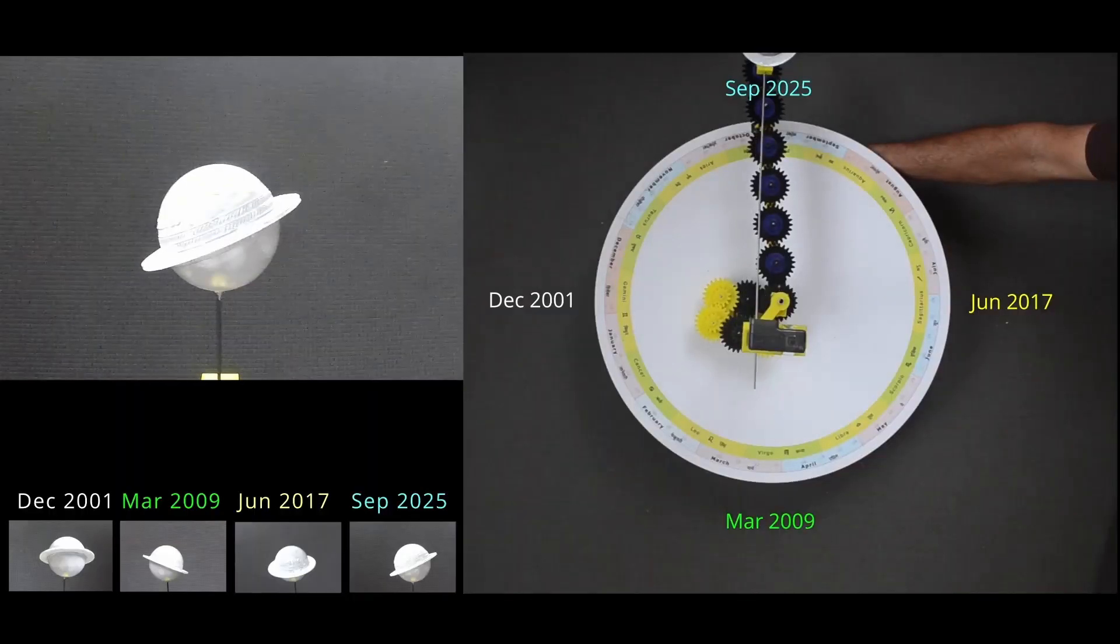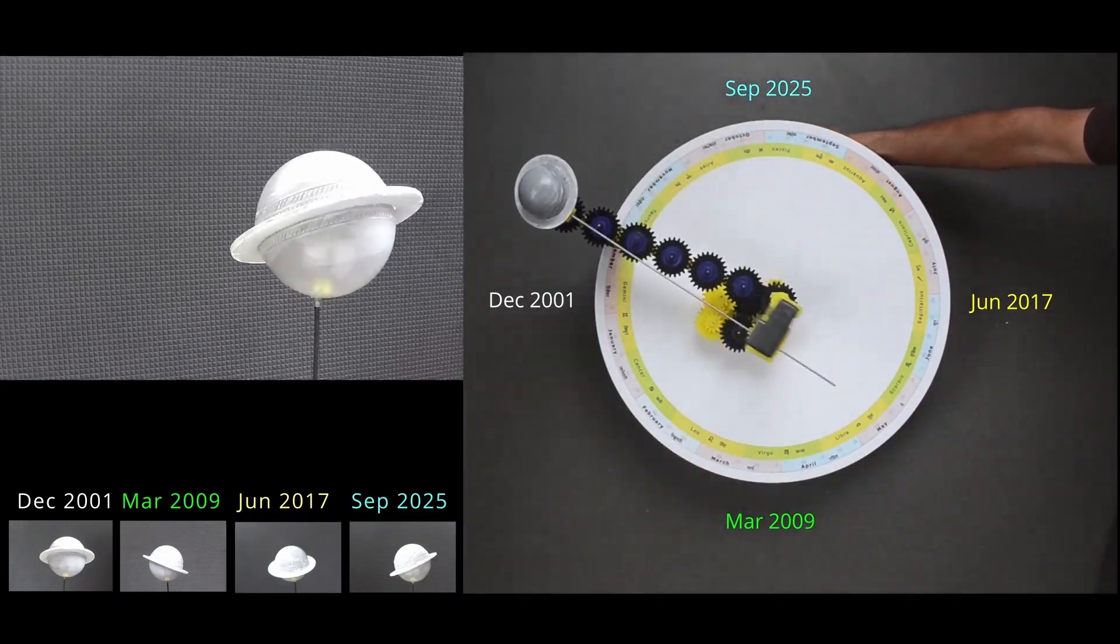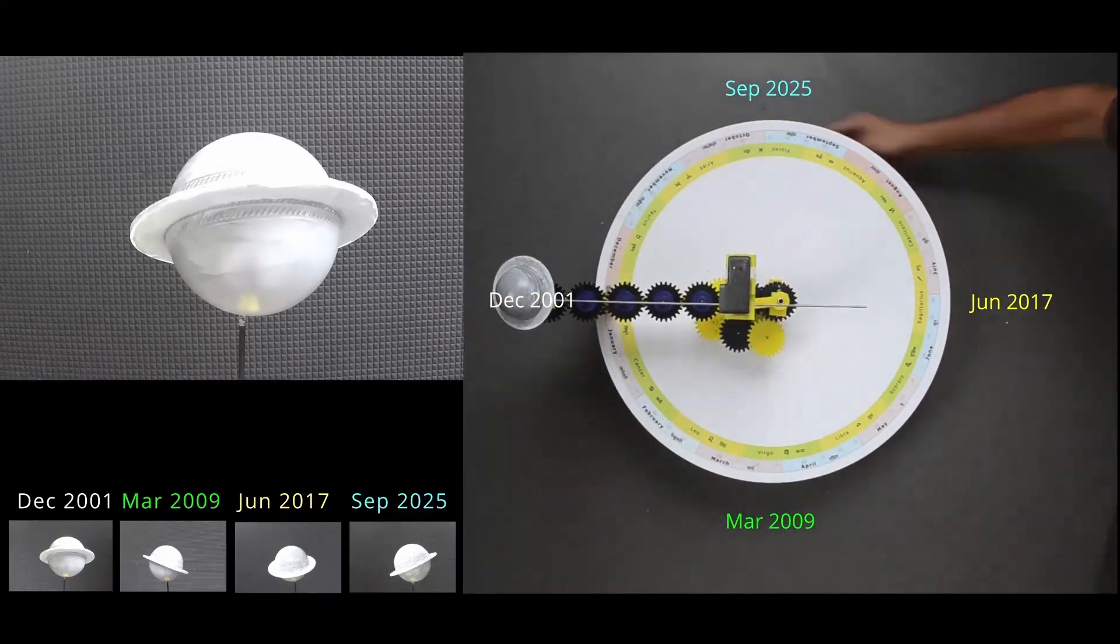September 2025, it's edge on again and planet is sideways with respect to Earth. After another 8 years, it completes the cycle and position is the same as earlier at this point.